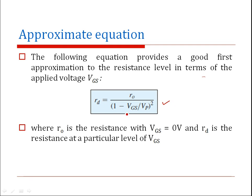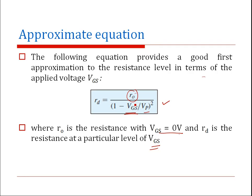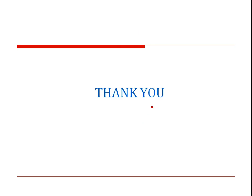There is an equation which provides a good approximation to the resistance level in terms of VGS. If you know the pinch-off voltage VP, VGS, and R-naught — which is the resistance with VGS equal to zero volts — you can compute R_D at different levels of VGS using this approximate equation. Values will be slightly different from those obtained from the graph, but it is still a good approximation.